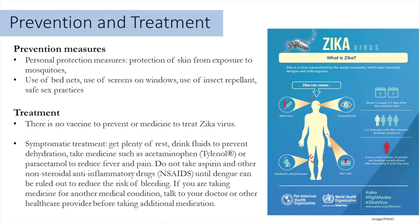In terms of treatment, there's no vaccine and no antiviral medication for Zika virus. When you develop symptoms like rash and flu-like illness, see your doctor right away. In addition, get plenty of rest, drink lots of fluids, and treat fever with Tylenol. You should not take anti-inflammatory medications or aspirin because of the bleeding risk. If you're taking any medicines for another medical condition, talk to your healthcare provider.